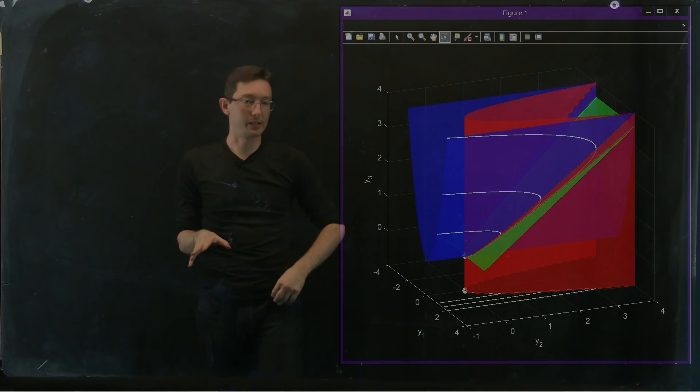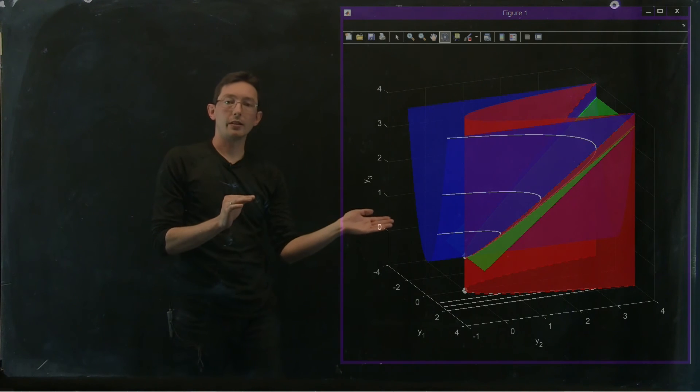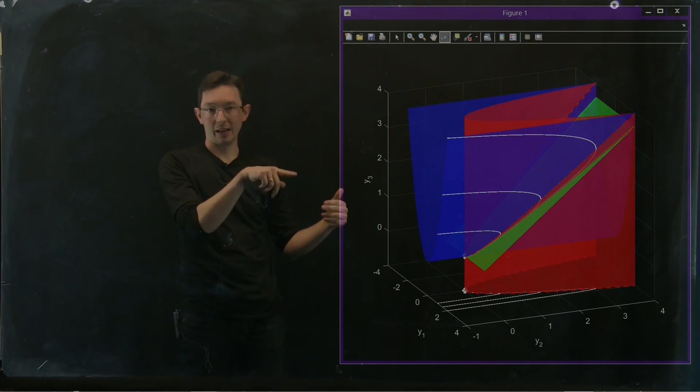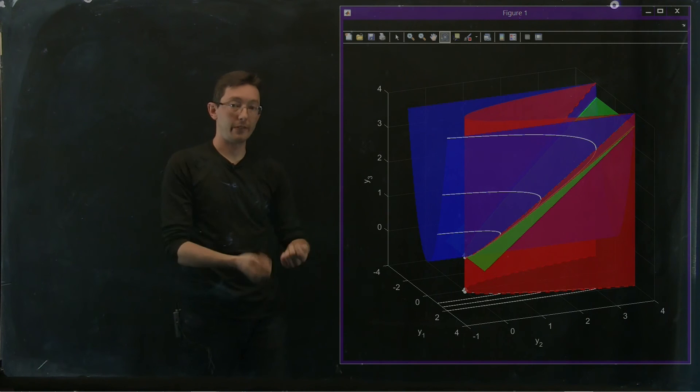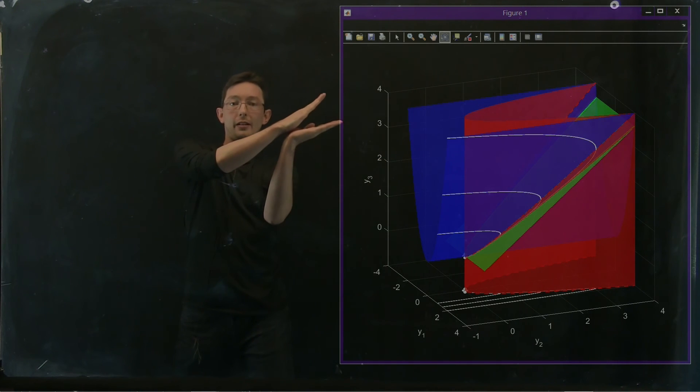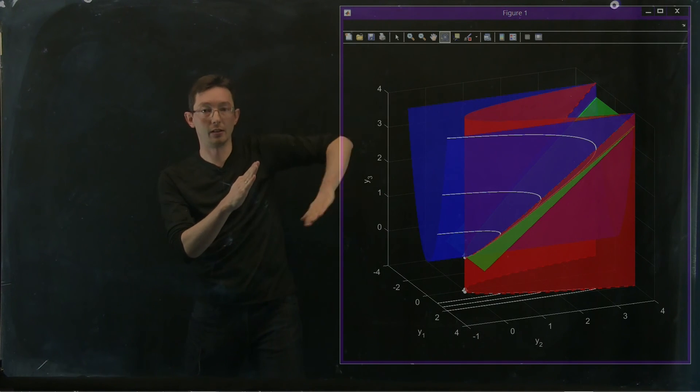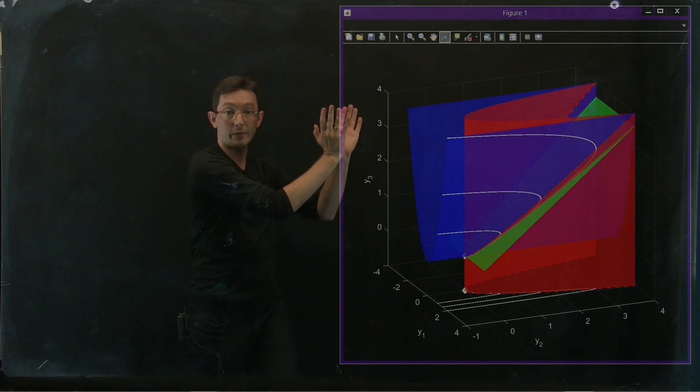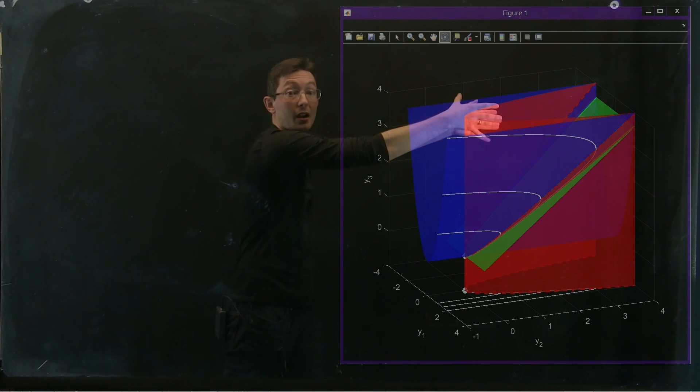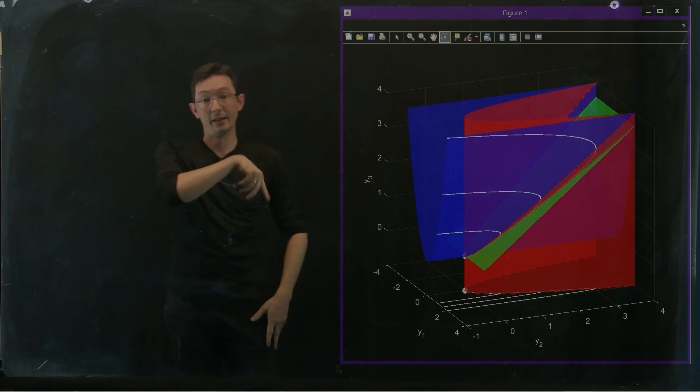And what you find, this is really interesting, is that as you make your fast dynamics, that lambda, as you make it faster and faster and faster, this green manifold starts to incline up and up and up until it perfectly aligns with the intersection of my initial condition blue manifold and my asymptotic attractor, this red slow manifold.